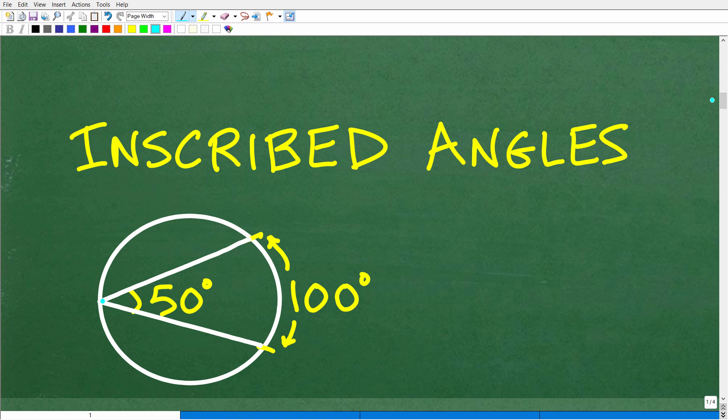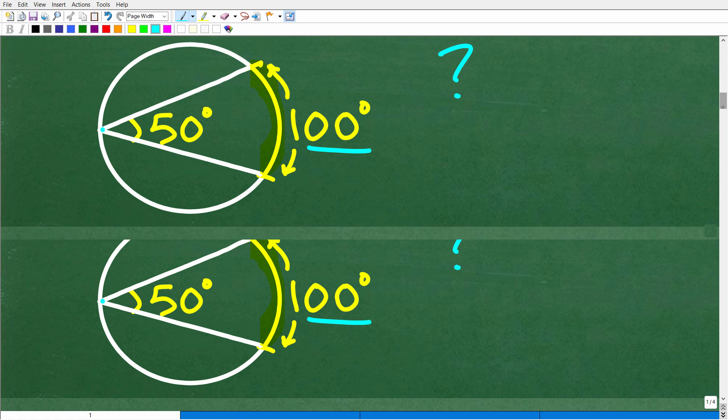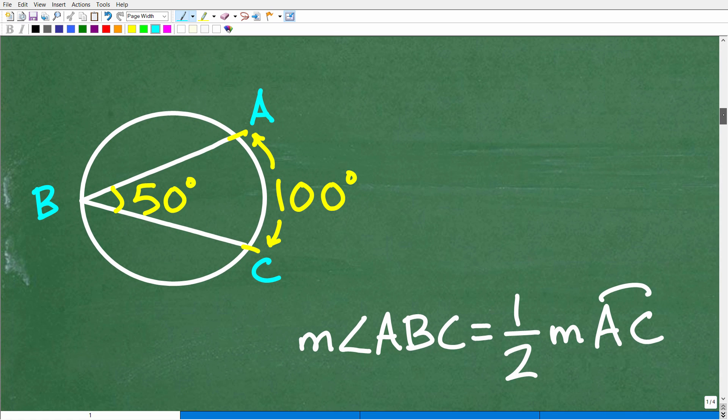Now, here is an inscribed angle. Notice here, the angle is 50 degrees, and I'm saying that this is an arc of 100 degrees. So if you have an inscribed angle of 50 degrees and the arc it forms is 100 degrees, what do you think the formula would be for an inscribed angle given the arc it forms? Hopefully it looks kind of obvious.